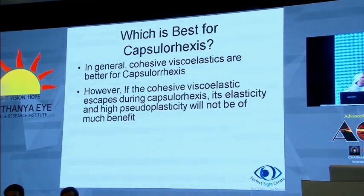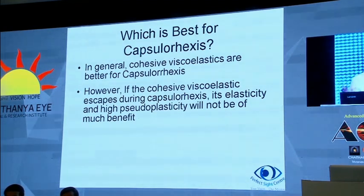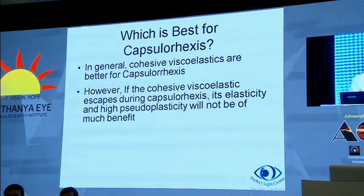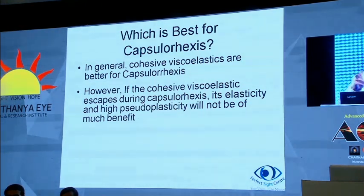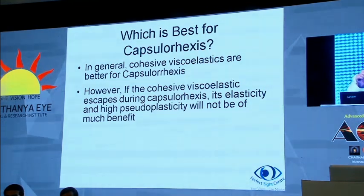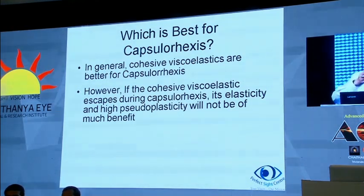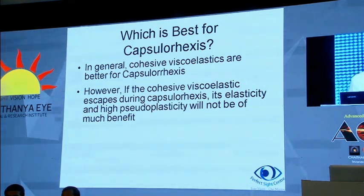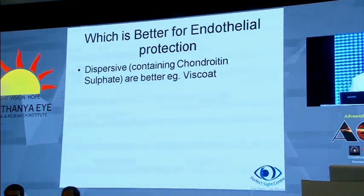Coming to specific procedures: what is best for capsulorrhexis? In general, a cohesive viscoelastic is better. However, there is a word of caution — cohesive viscoelastics escape if given an opening, which reduces the benefit of their elasticity and pseudoplasticity. The key is to learn to maintain it: if we depress the lower lip of the wound, the viscoelastic tends to escape. If you can hold it in there, it will provide better capsulorrhexis. For endothelial protection, dispersives containing chondroitin sulfate, such as Viscoat, are better.